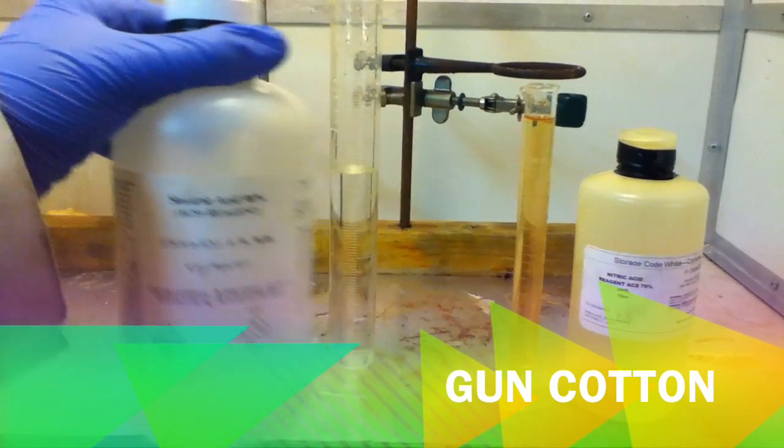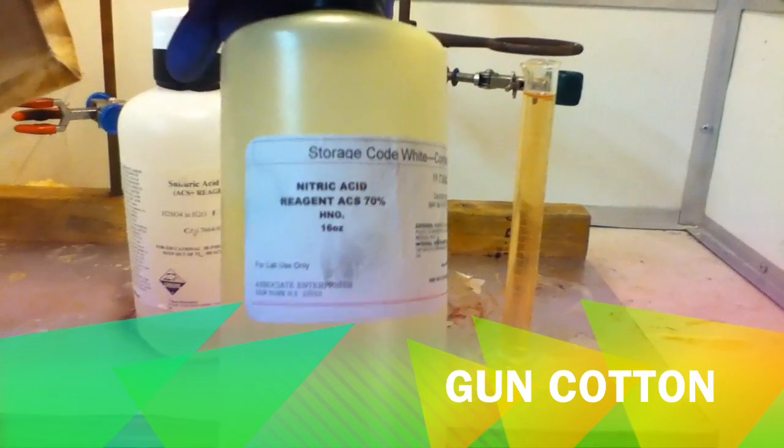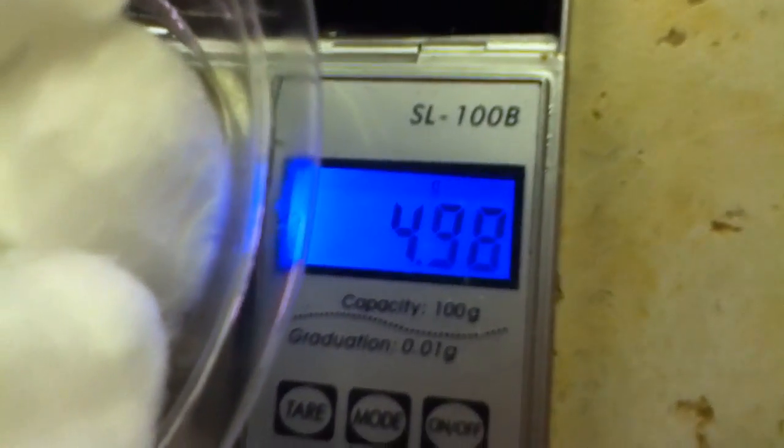Today we're going to make gun cotton, or nitrocellulose. Start with 70 milliliters of sulfuric acid and 30 milliliters of nitric acid. Next, weigh out 5 grams of your cellulose. We will be using cotton balls.